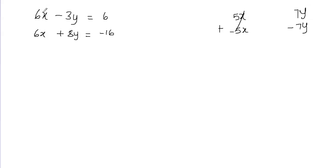Now let's look at the x variable. We have 6 in front of x in both equations — the same coefficients with the same signs. When you have the same coefficients with the same signs, you subtract the equations to eliminate that variable.